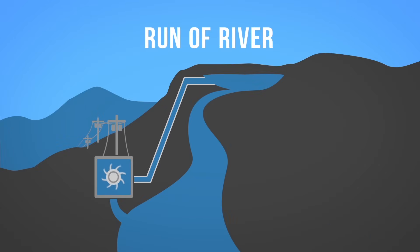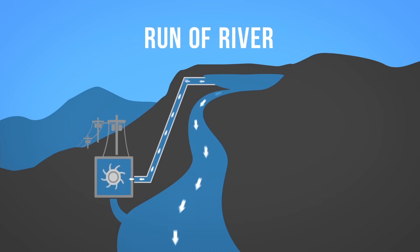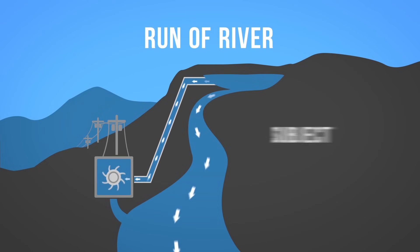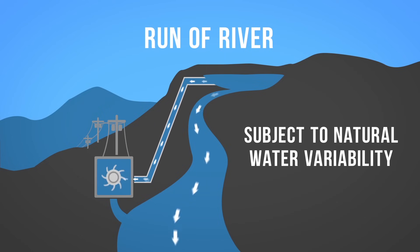The second form of hydroelectricity production is run of river hydro. Run of river still uses turbines and generators, but relies on natural water flow rates of rivers, diverting just a portion of the water through turbines. Because run of river hydro is subject to natural water variability, it is more intermittent than dammed hydro.